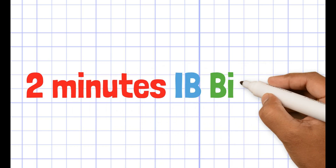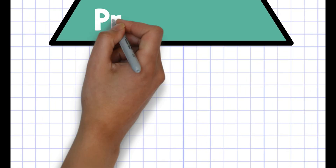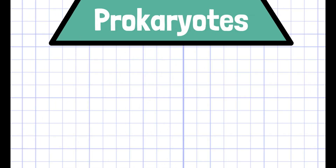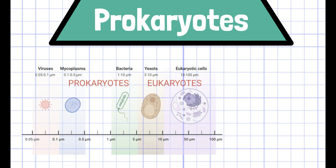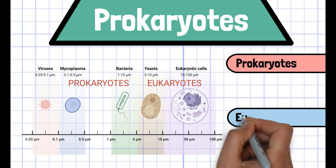Welcome to 2-Minutes IB Bio. In this video, we'll discuss prokaryotes. Organisms on the planet can be divided into two groups: prokaryotes and eukaryotes.